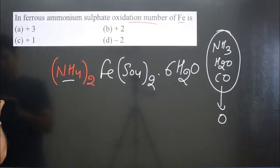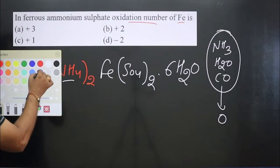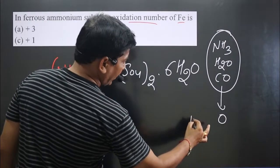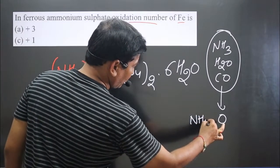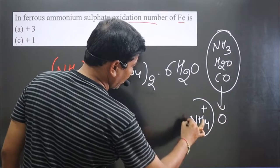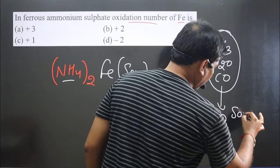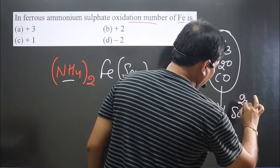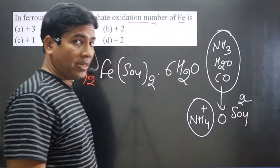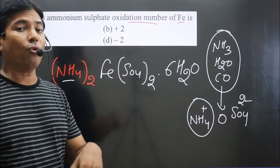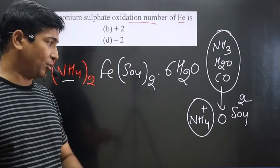If you look at the chemical formula of ammonium ion, we have NH4+. This is ammonium ion. Similarly, we have sulfate ion, SO4^2-. Sulfate always carries minus two charge.